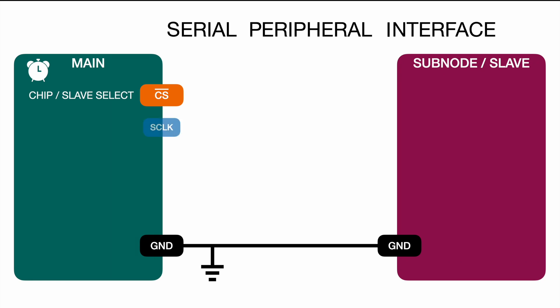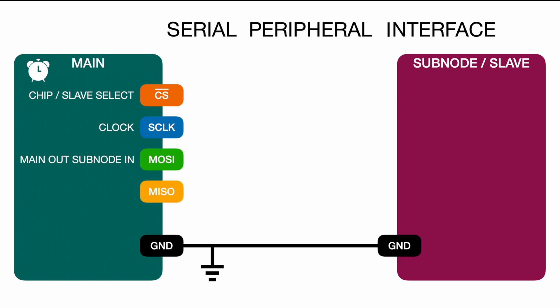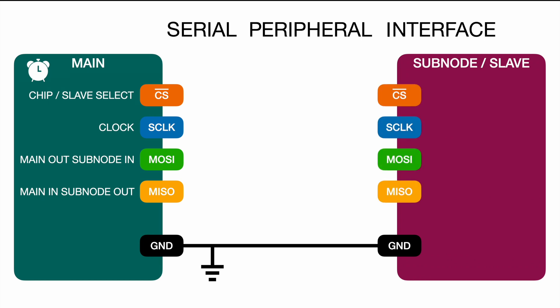Next up we have SCLK, which is the serial clock. We have MOSI, the first data pin — MOSI stands for Main Out Subnode In. And MISO, which is Main In Subnode Out. Those are all the SPI-specific pins, and what we have on the main we also have vice versa on the subnode.